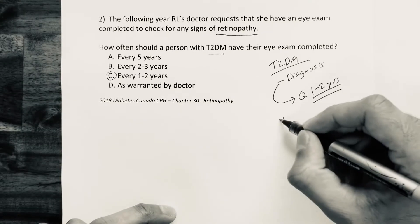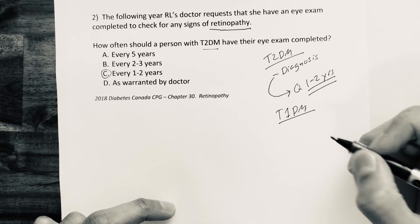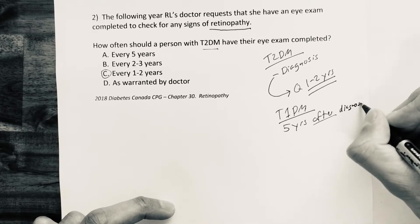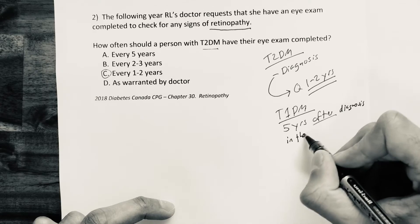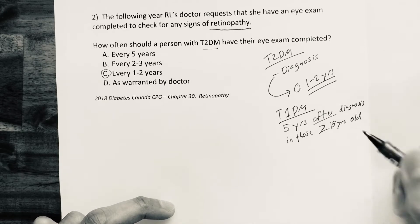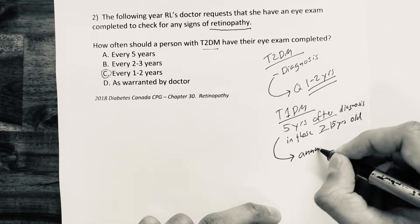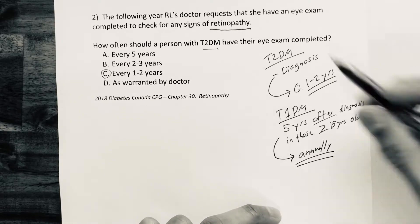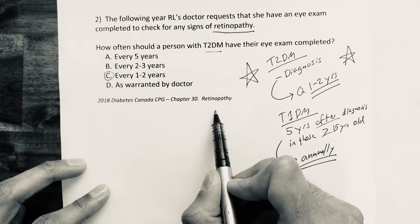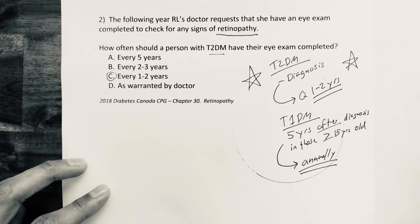For completeness, let's cover type 1 diabetes screening as well. For a person with type 1 diabetes, we initiate screening 5 years after diagnosis in those greater than 15 years of age. If no retinopathy is present at that stage, we screen every year — annually — after that. Please check out Chapter 30, Retinopathy, of the Diabetes Canada Clinical Practice Guidelines 2018.